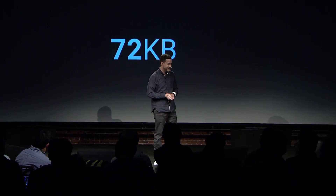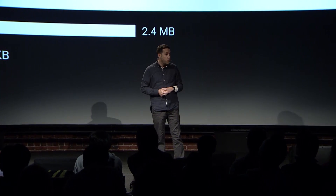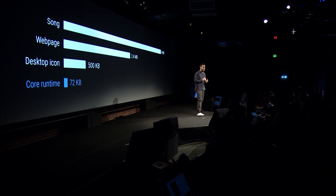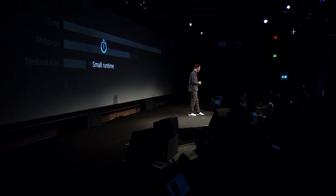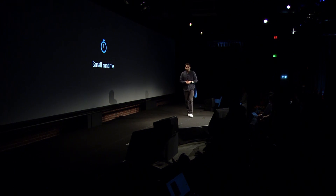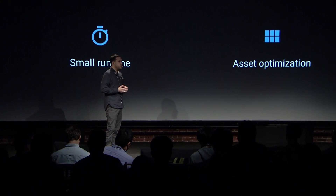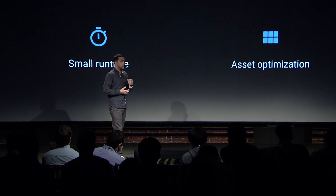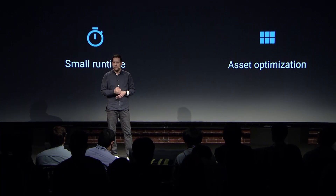Let me put that in a frame of reference. A song you stream off the internet is on average 4 megabytes. A web page on average is 2.4 megabytes. A desktop icon — just the icon — is 500 kilobytes, and we're doing 72 kilobytes. But it's not just about that small runtime. We're combining it with optimization through our asset pipeline to create small assets resulting in small file size. The data-driven architecture that Joachim just spoke about, combined with those small assets, leads to fast delivery and startup times.